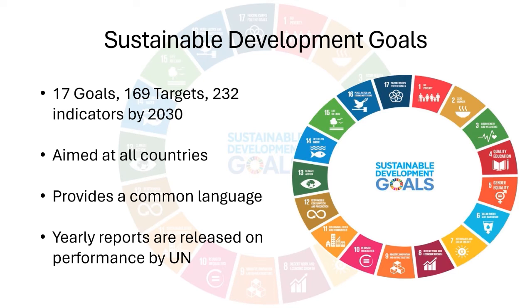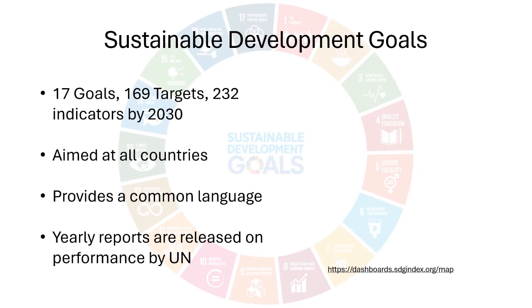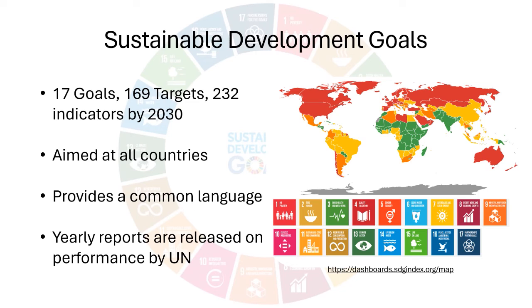They are aimed at all countries, whether developed or developing, unlike MDGs which focused mainly on developing countries. SDGs provided a common language and measuring criteria for the whole world to track their goals and progress towards sustainable development. The UN releases a yearly report country-wise on all goals based on data gathered by different indicators. If you want to check how your nation is performing on SDGs, check this website and explore the data.